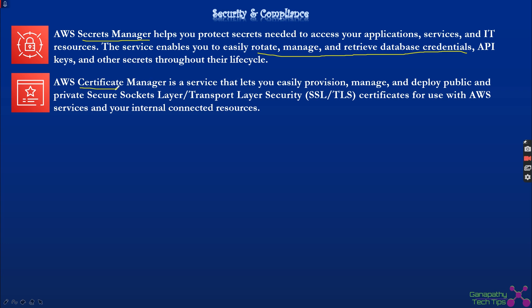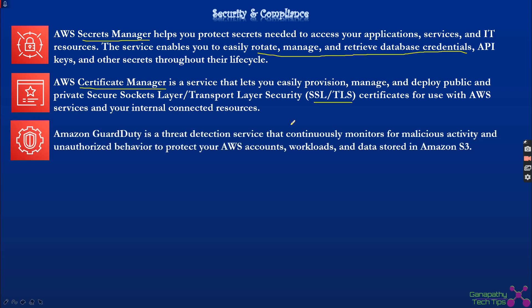AWS Certificate Manager is all about TLS and SSL — the HTTPS lock symbol you see on websites. It represents secured communication between a web browser and a web server using a certificate. All SSL and TLS certificates are managed using AWS Certificate Manager. You can also bring your own certificate: if you already have an SSL certificate and want to deploy it on AWS, that is managed through Certificate Manager as well.